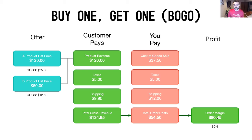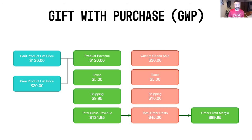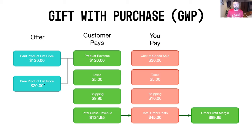You can see how, even though you're offering more value to the customer and it looks like you're giving more away, you're actually making more money in absolute dollars. Now let's go one step further and look at a gift with purchase. Maybe you're not ready to give away a whole product — you just want to give something of lower value, a loss leader. It's similar to BOGO but with a smaller free item.